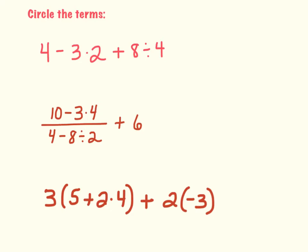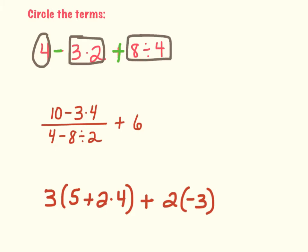Let's go ahead and check out some practice problems — see if we can circle the terms. Push pause and try to identify the terms, then push play to check. In the first one, I look for my adding and subtracting signs. My terms are everything outside of those: 4 is a term, 3 times 2 is a term, and 8 divided by 4 is a term. All that's left uncircled are the subtraction and addition signs.